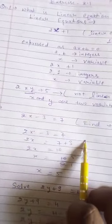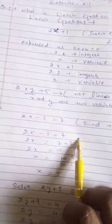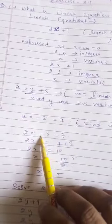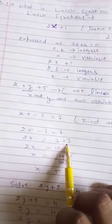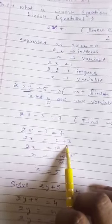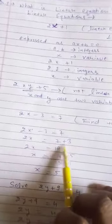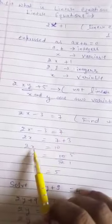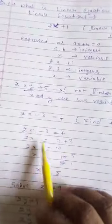So if minus sign we will shift left to right then it will be plus. Plus sign if we will shift from left to right then it will be minus. Multiply if we will shift it will be divide. So minus 3 will be here plus 3. Now minus 3 is in the right hand side of this equation means plus 3.